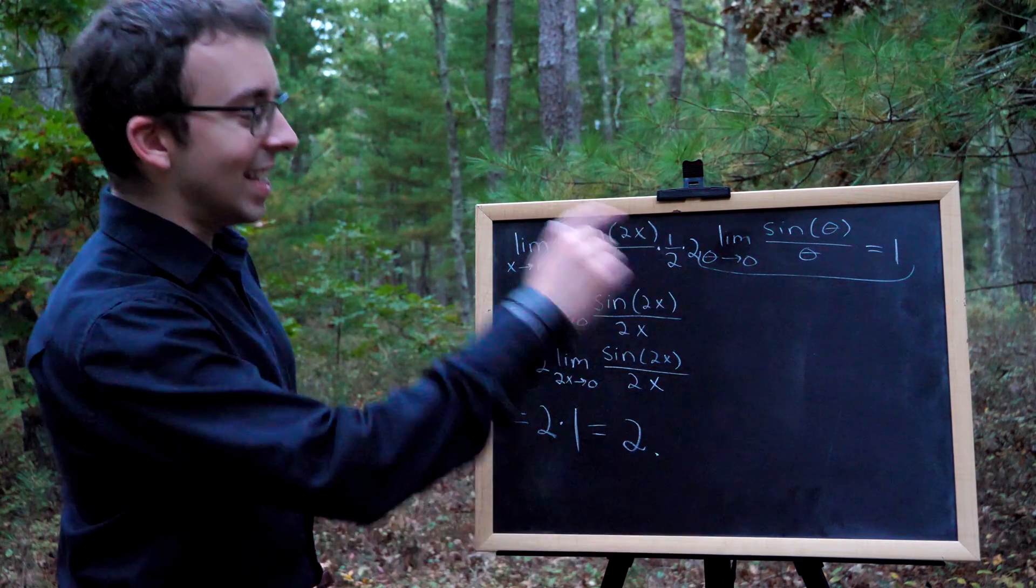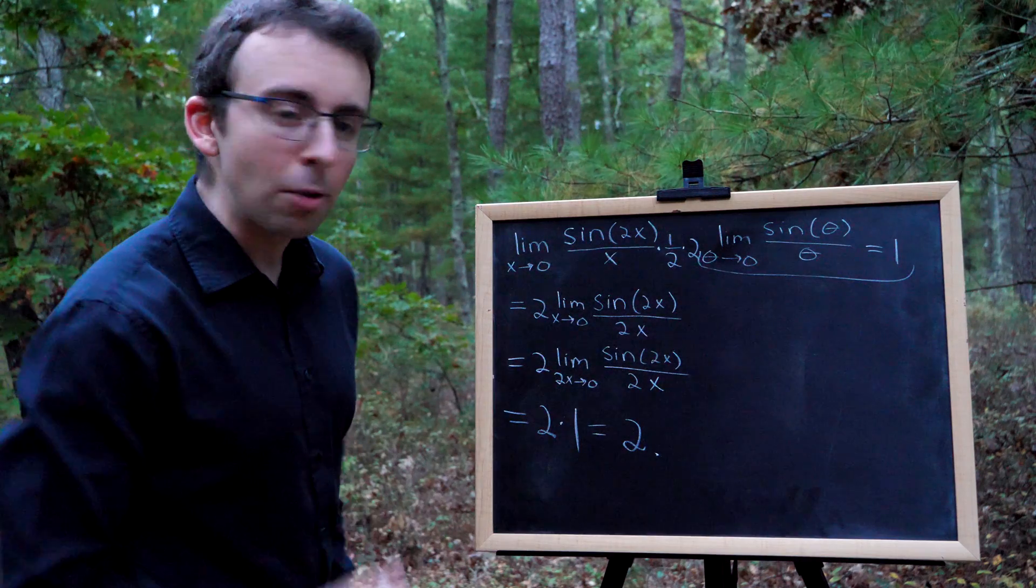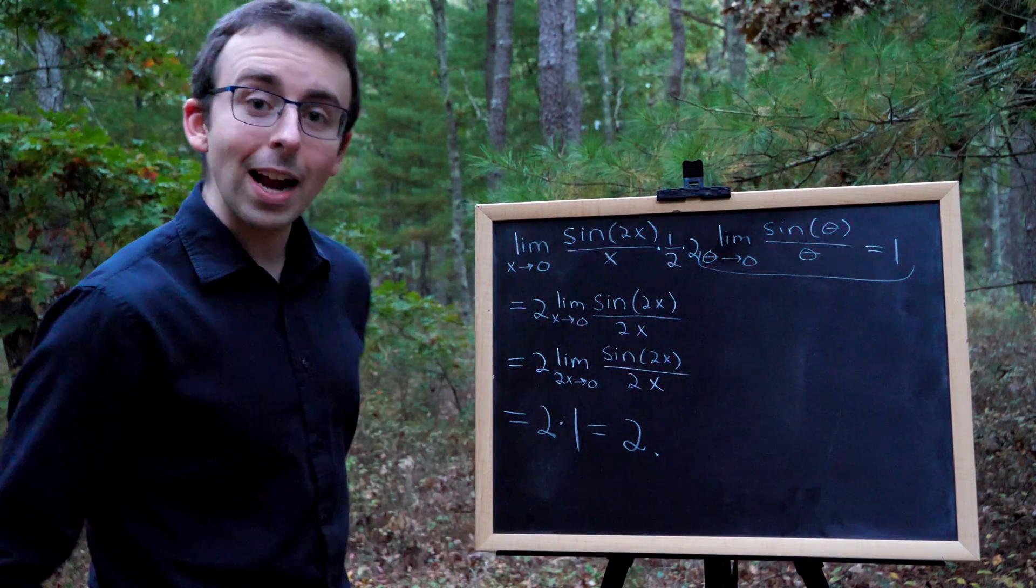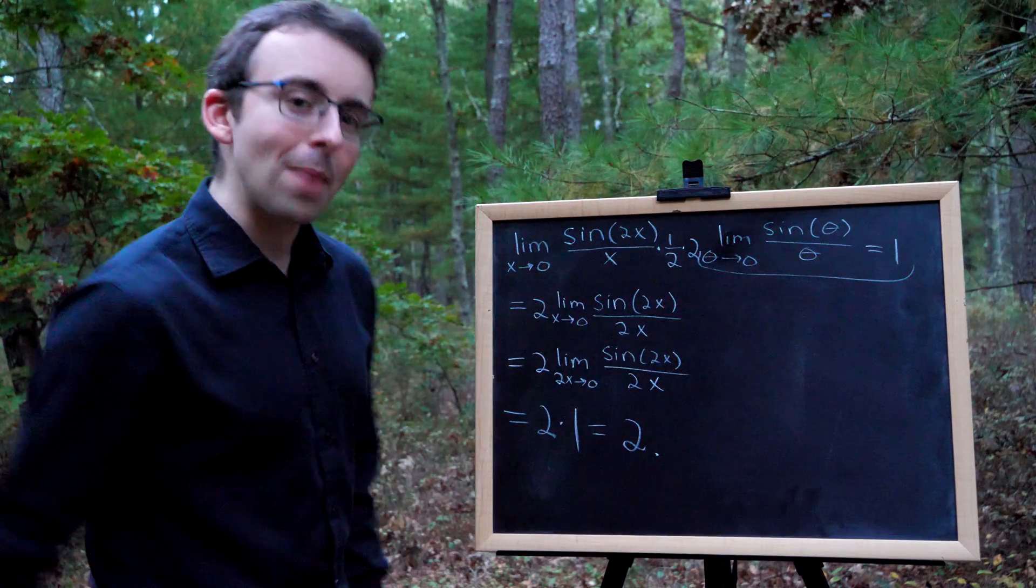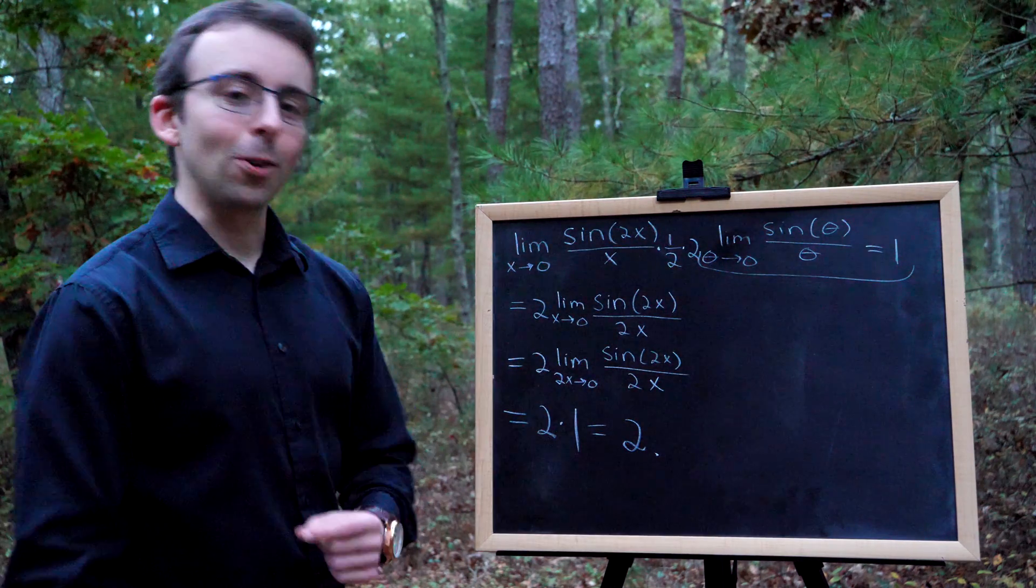But that's it. The limit as x approaches 0 of sine of 2x over x is just equal to 2. And you just got to know this fundamental trigonometric limit in order to do it.